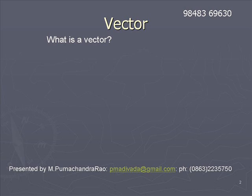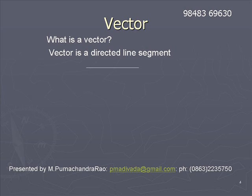A vector is a directed line segment. To understand this, let us draw a line segment.